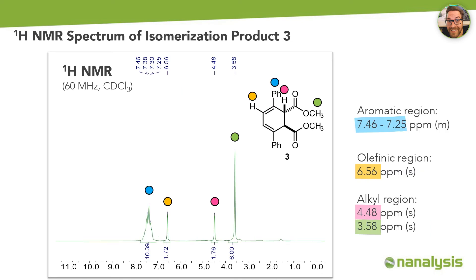The successful generation of the isomerization product can be confirmed by proton NMR as well. The aromatic hydrogen atoms appear as a multiplet in the range of 7.46 to 7.25 ppm due to the conjugated double bonds. The alkene signal shifts downfield to 6.56 ppm in comparison to the previous spectrum. Both the alkene and vinyl protons are observed as singlets rather than doublets, due to the absence of neighboring atoms. The methyl groups remain quite unchanged at 3.58 ppm.